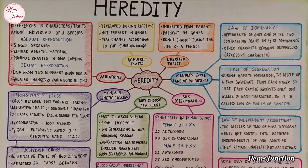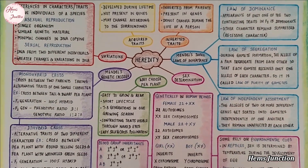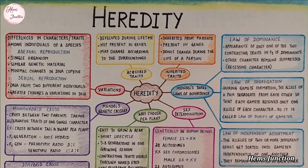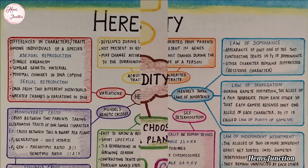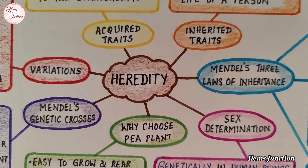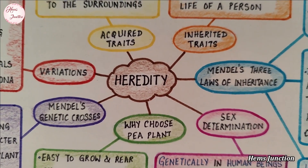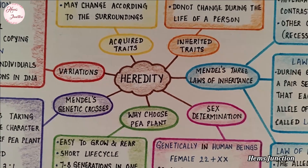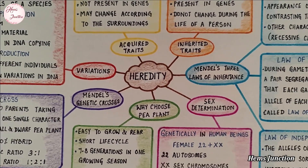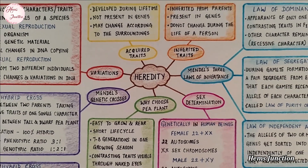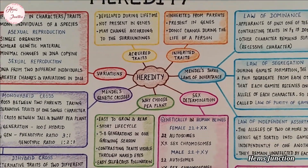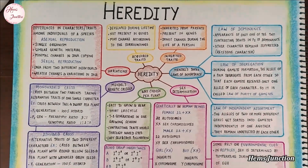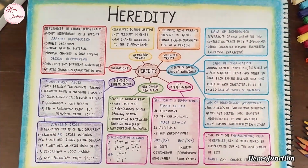Here is the mind map of the chapter Heredity. Heredity is a transmission of characters or traits from parents to their offsprings through genes. It is also called inheritance. Heredity can occur through sexual or asexual reproduction. Some amount of variation is also produced during reproduction.